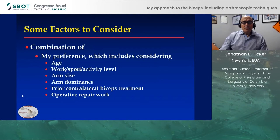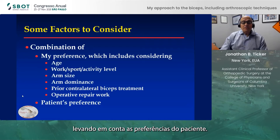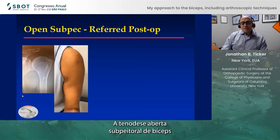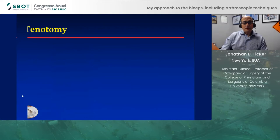Some factors I consider when discussing this with a patient are a combination of my preferences, particularly age and level of activity, as well as other aspects, but also taking into account the patient's preferences. As far as open subpectoral biceps tenodesis, this is not something I use very often. I see plenty of patients referred to me — these are examples of patients with failed sub-pec surgery, and fortunately I've not seen this type of fracture.